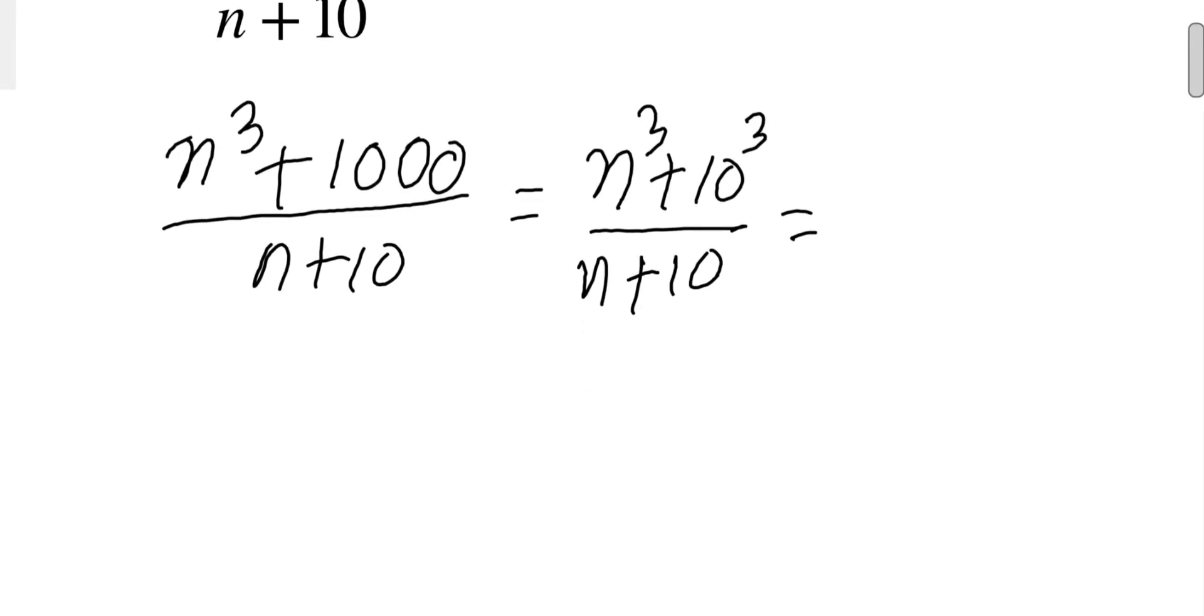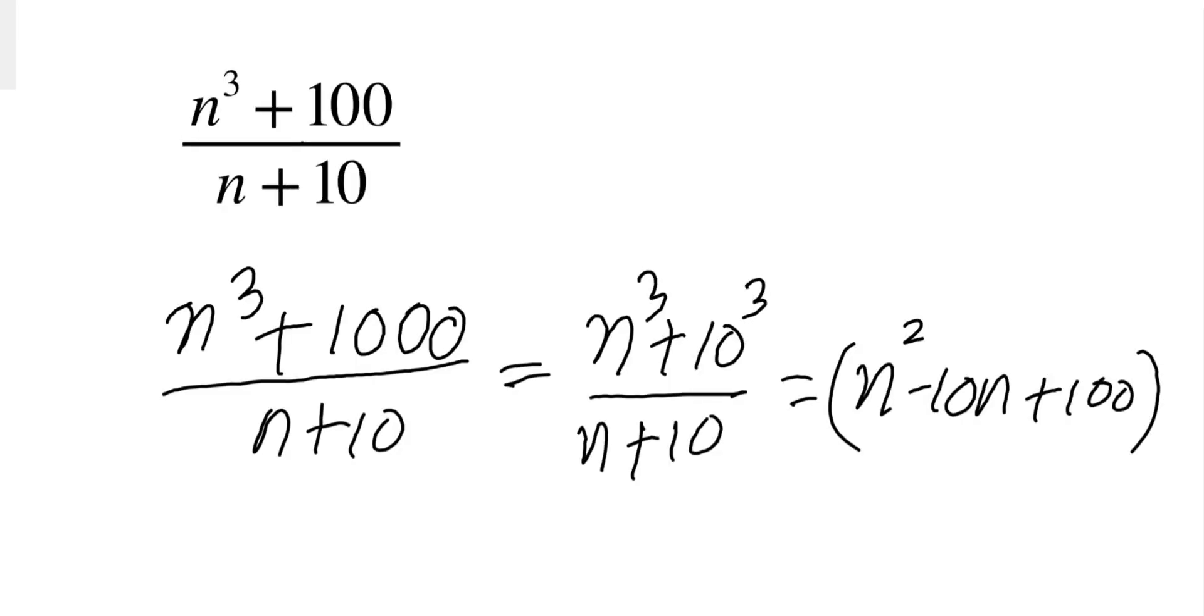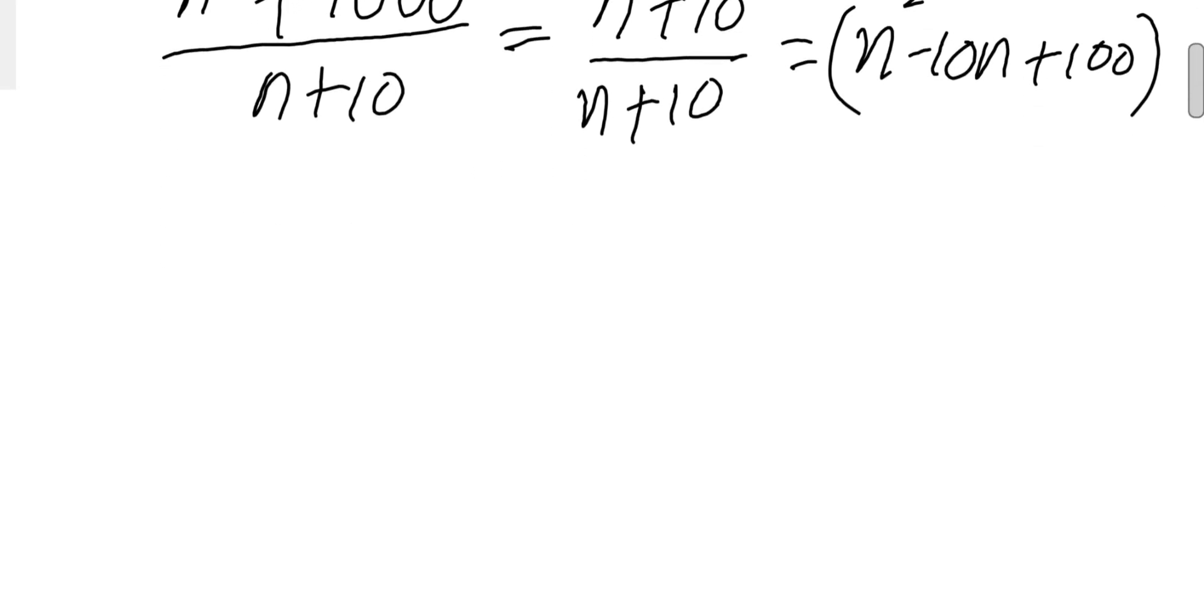The problem is here we have 100, not 1000. So let's make it 1000. We can add and subtract 900 and just make it 1000. So this equals (n³+1000-900)/(n+10).